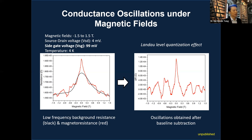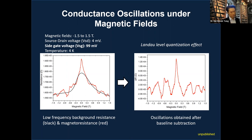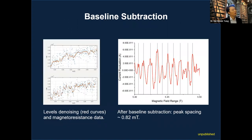The unfiltered data shows a background resistance related to the Dirac point and other effects. After manually subtracting this baseline, oscillations were visible. Initially we were excited, but further study revealed these were not AB oscillations — they were due to graphene's quantum Hall effect, known as Landau level quantization, which produces conductivity oscillations under large magnetic fields.